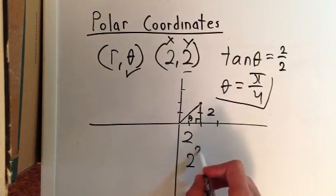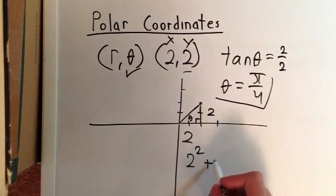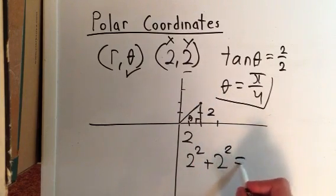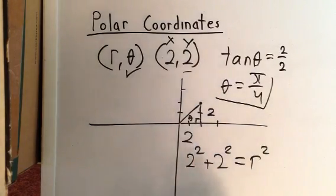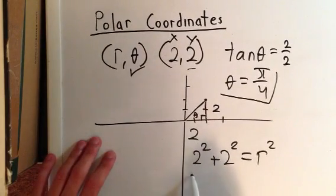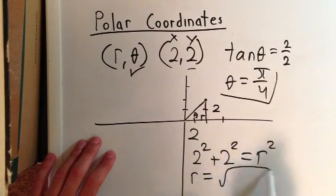we know that 2 squared—this leg squared plus the other leg squared—is equal to r squared. So basically r would end up being the square root of 2 squared plus 2 squared.